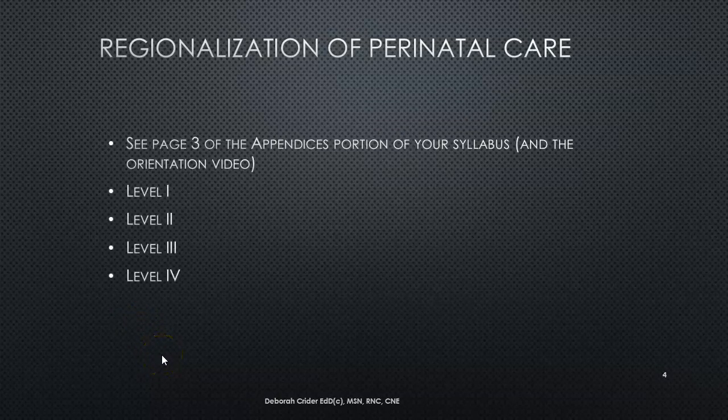I want to begin by looking at the regionalization of perinatal care. When you look at the normal newborn nursery, there are levels of care. You're probably familiar with hearing trauma one or level one trauma care, and in the adult health care community that is the highest level of care. But in OB land, when you're caring for newborn babies and moms, it's actually the opposite. So your lowest level of care would be a level one facility — a basic community hospital taking care of healthy moms and healthy babies.